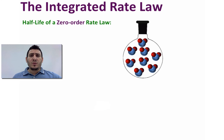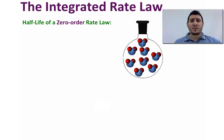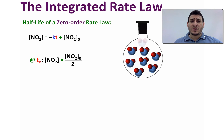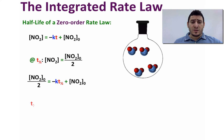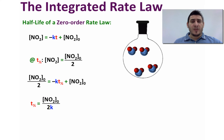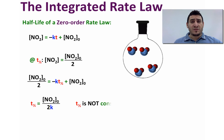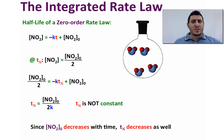Now we will define what is called the half-life. The half-life is how much time it takes for the reaction to consume half of its initial concentration. So at the half-life, the concentration of NO2 equals the initial concentration divided by 2. Rearranging this expression, we get that the half-life equals the initial concentration of NO2 divided by 2k. This means the half-life depends on the initial concentration and is therefore not constant.